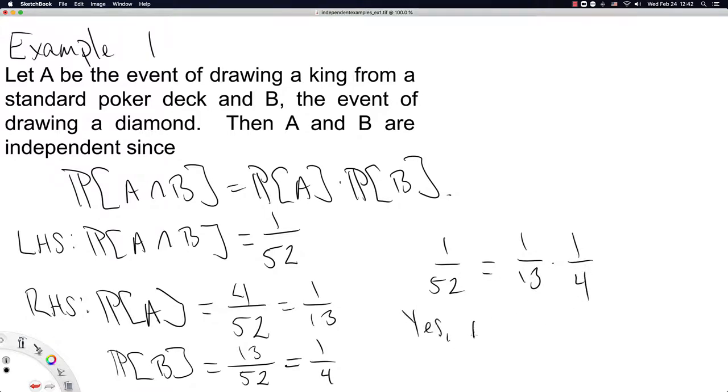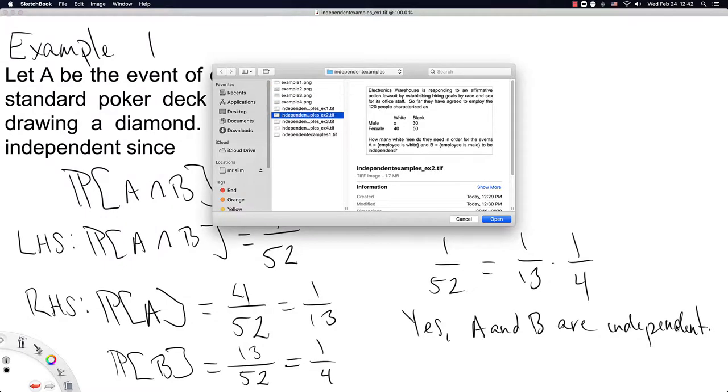So we conclude yes, A and B are independent, as we just showed. Okay, that example wasn't so bad. Let's try a slightly more complicated example.